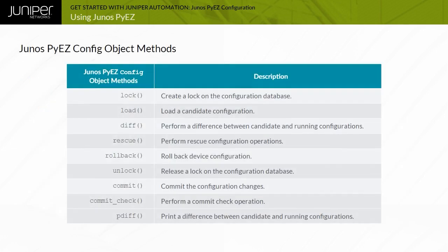Here are the methods that are available for the Junos PyEasy jnpr.junos.utils.config module config object class. Python examples using these methods are the focus of this module.